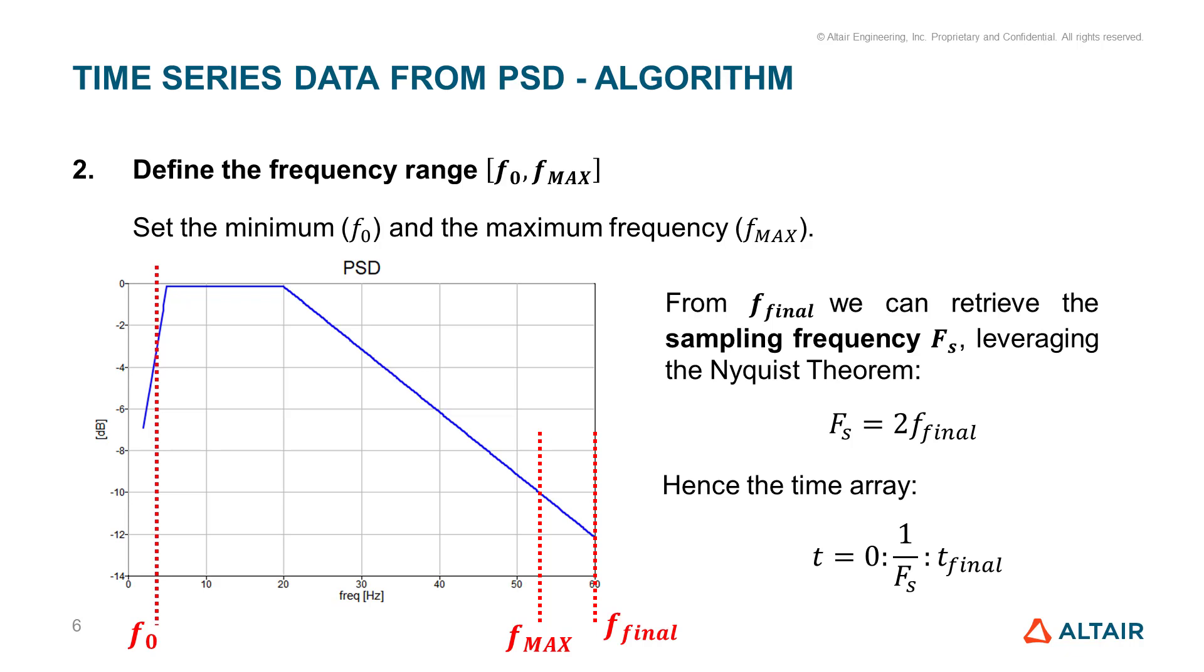In order to generate the time array, we have to know the sampling frequency. Given the final frequency of our PSD curve, we can obtain the sampling frequency through the Nyquist theorem.